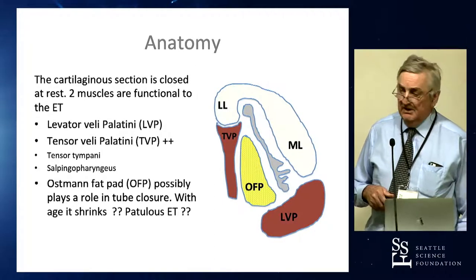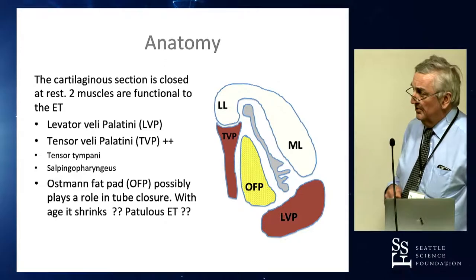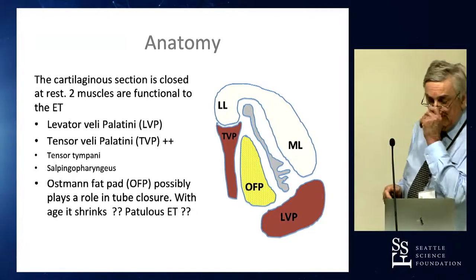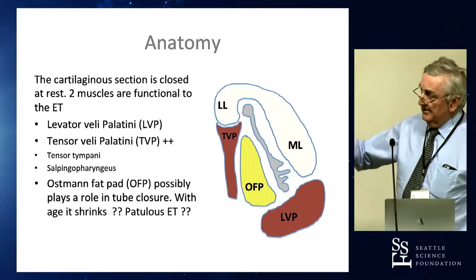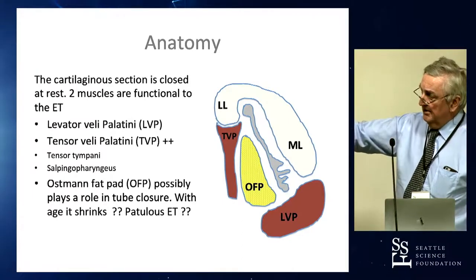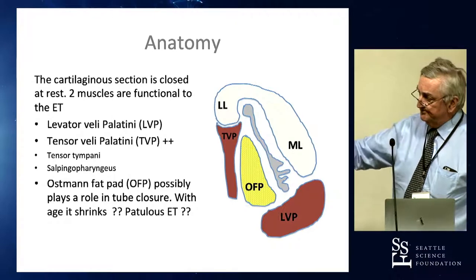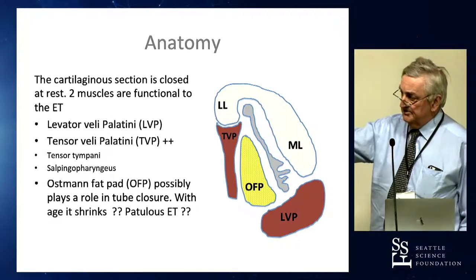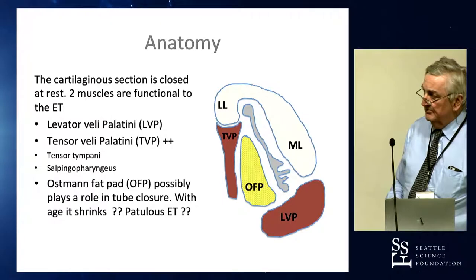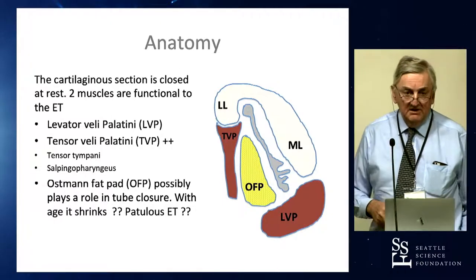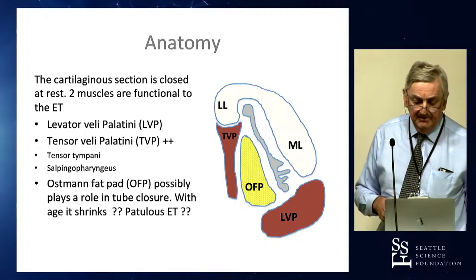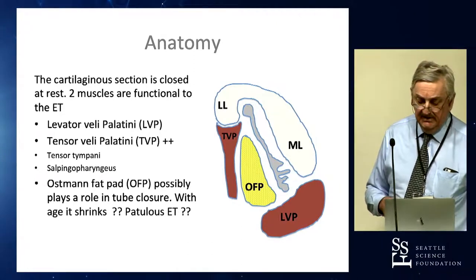The anatomy is quite important. The LL is the lateral lamella and the medial lamella of the cartilage. OFP is Ostmann's fat pad. The two muscles really associated with the Eustachian tube are the levator veli palatini and the tensor veli palatini.